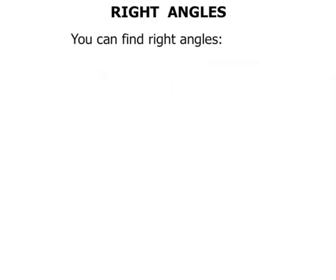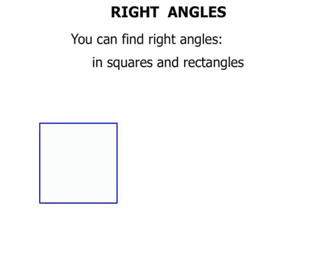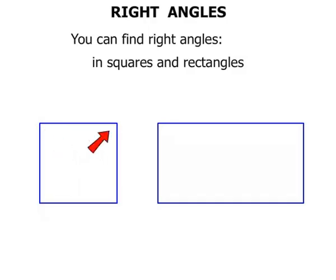Now you can find right angles in squares and rectangles. So there's a square, there's a rectangle. Each of those corners are right angles. So the square has four right angles, and the rectangle also has four right angles.